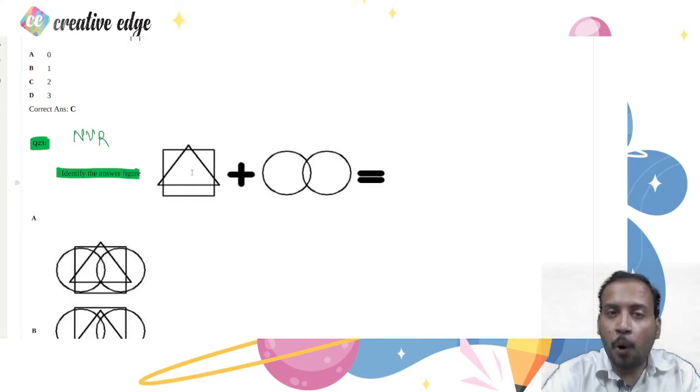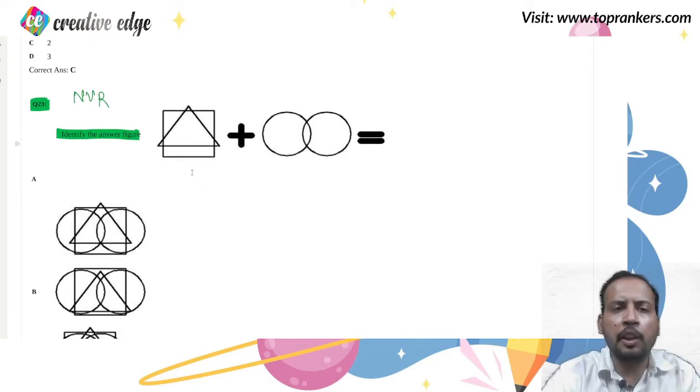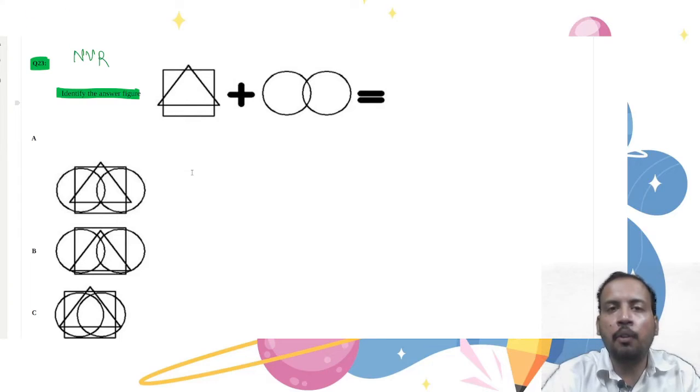Now when it comes to non-verbal reasoning, there are different topics, a vast range of questions you can see. For example, you have this question where you have to add two figures and tell us what the resulted figure will look like.